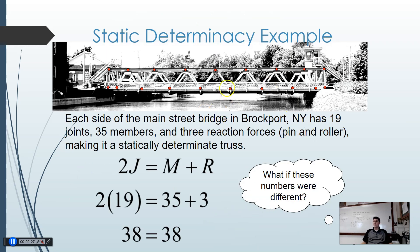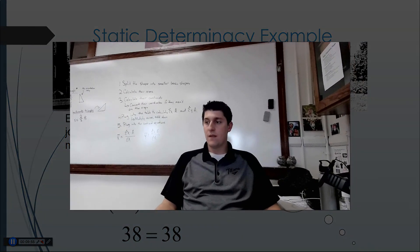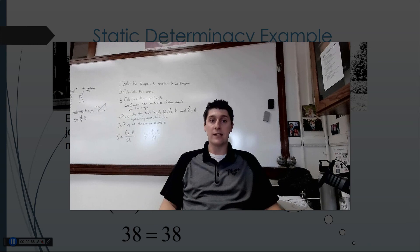Here's a real-world example: a bridge in Brockport, New York. It has 19 joints, 35 members, and 3 reaction forces — one pin and one roller. So 2 times 19 joints equals 38, and 35 members plus 3 reactions equals 38. Since 38 equals 38, this structure is statically determinate. We'll go over this in class and do more example problems. Go ahead and start working on the static determinants practice assignment. Good luck!